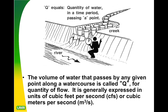In our last lab we looked at flow rates and talked about how different orientations, diameters, and amount of head would affect different flow rates. So you have a pretty good idea of what a flow rate is — it could be measured in gallons per second, meters per second, or cubic feet per second. Either way, the equation we used was Q, flow rate, is equal to V over T, volume over time.